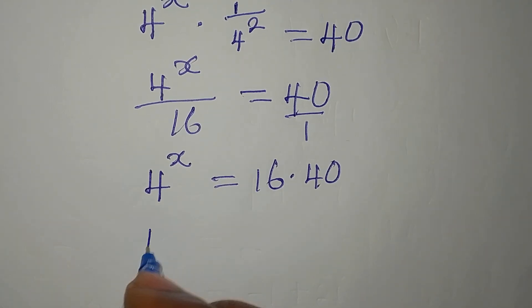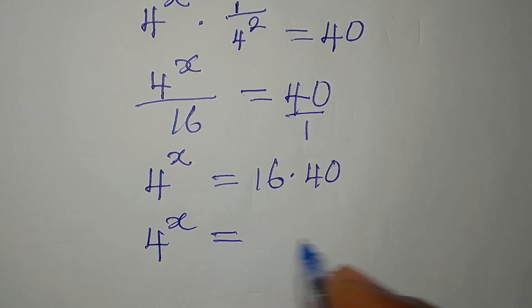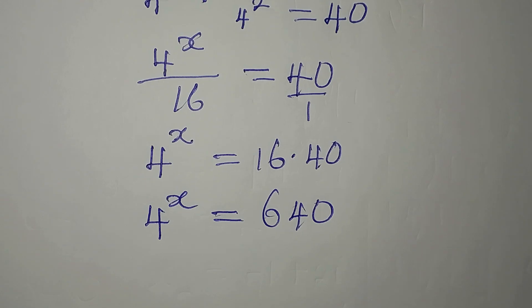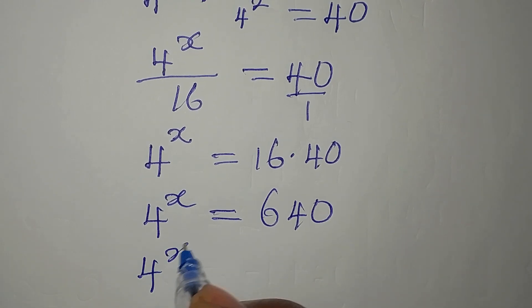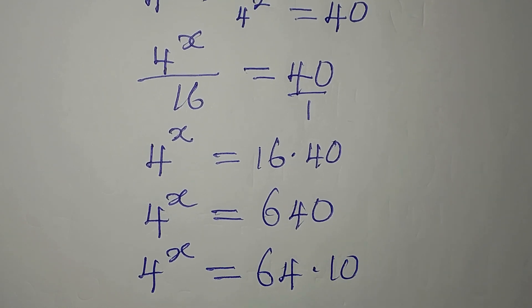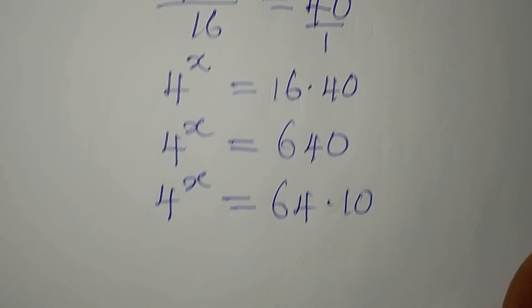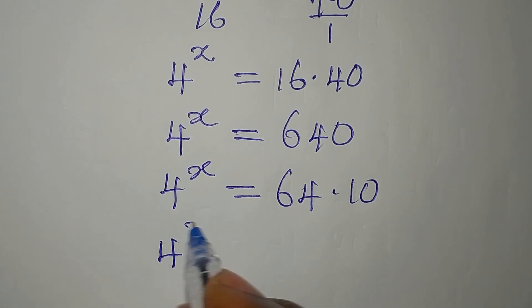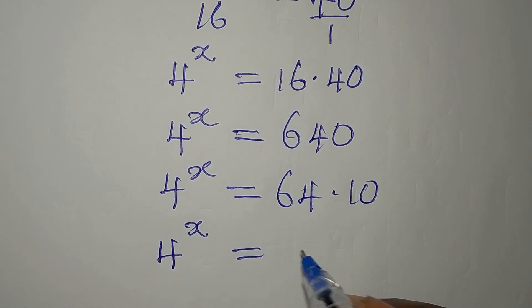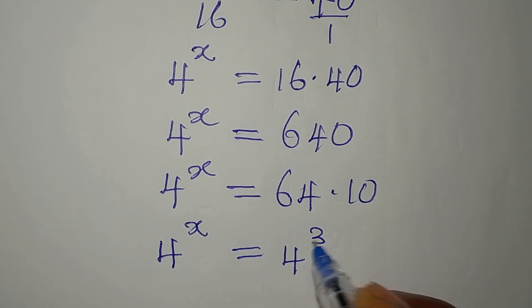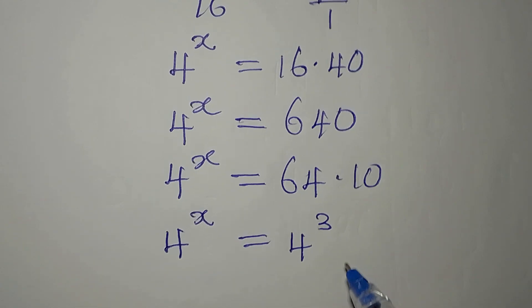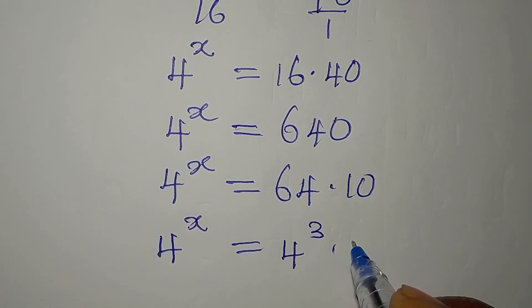So 4 to the power of x equals 640, which is 64 times 10. And 4 to the power of x equals 64 times 10. Now, 64 is the same thing as 4 to the power of 3. So 4 to the power of x equals 4 to the power of 3, multiplied by 10.